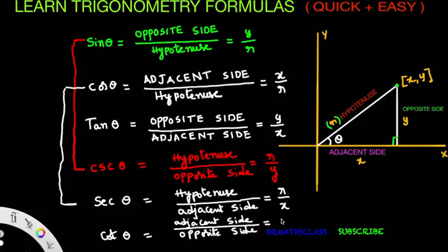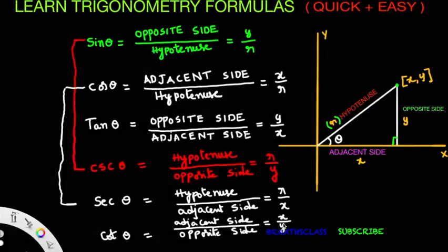Cot theta is defined as adjacent side by opposite side. Cot theta formula you can write easily from tan theta, since cot theta is the reciprocal of tan theta. Tan theta is Y by X, so cot theta is X by Y. So the six trigonometric functions are defined like this.